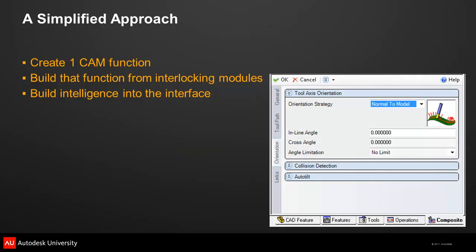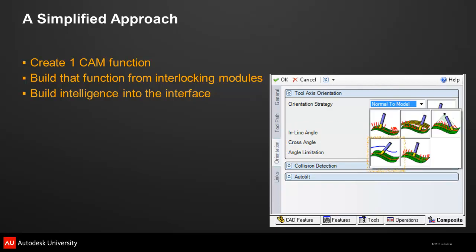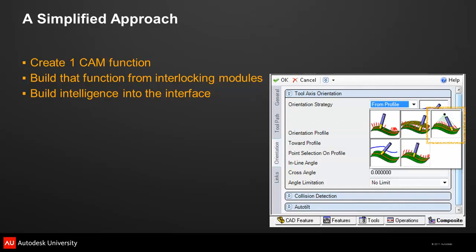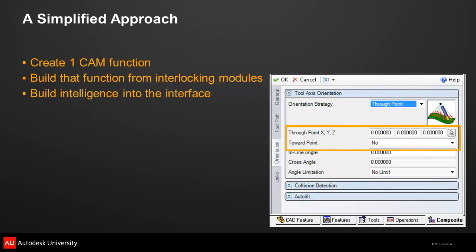Another way to simplify the software is to design an interface that responds intelligently to the choices being made. For example, the tool strategy to keep the tool axis normal to the model provides three options to control the forward and sideways tilt of the tool. If you change the strategy to one that has the tool follow a path, new options appear for selecting the curve and defining how the tool travels along it. Another strategy to orient the tool axis through a fixed point gives options for the location and direction of the point. This step-by-step guidance helps the user avoid errors without imposing limitations.